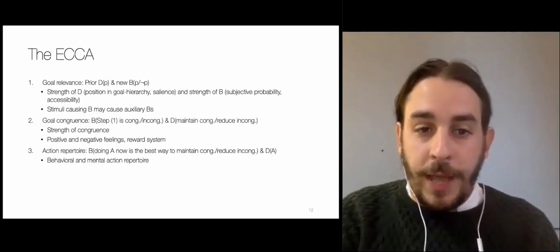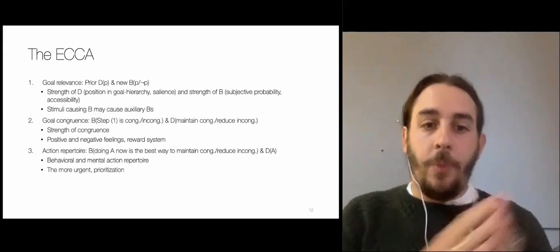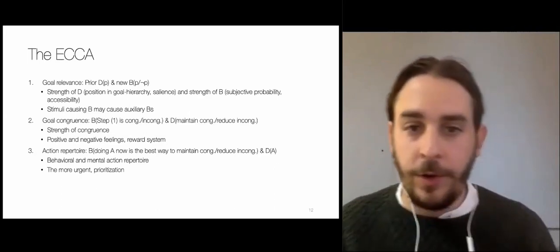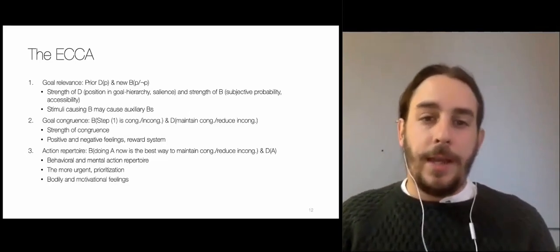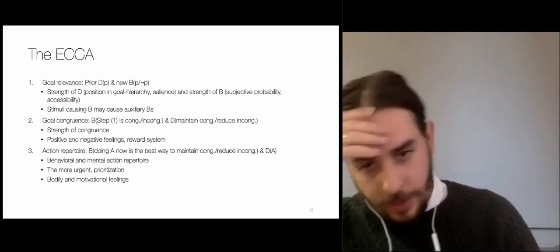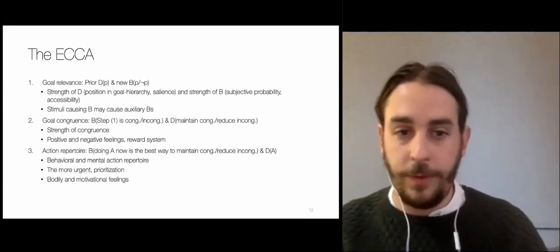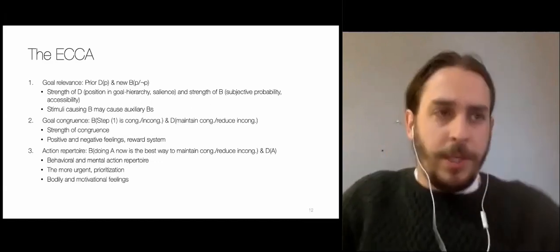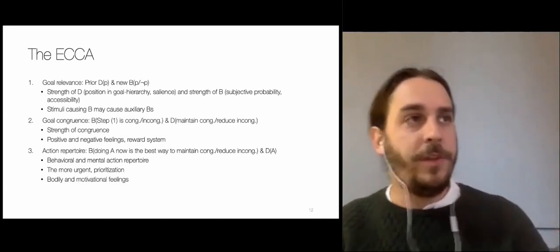The action A comes from your behavioral or mental action repertoire. The more urgent the maintenance of congruence or the reduction of incongruence, the more prioritized the action is going to be — you may stop everything else to do it. This desire or intention to do A will cause bodily and motivational feelings. If they are strong enough, you will feel your body prepared — for instance, to run or to attack — and you will feel the motivational components as well.